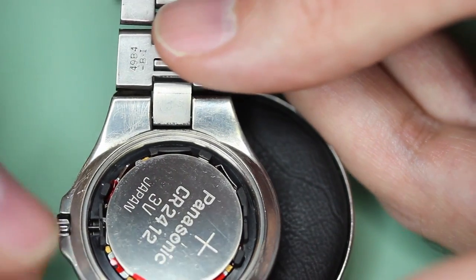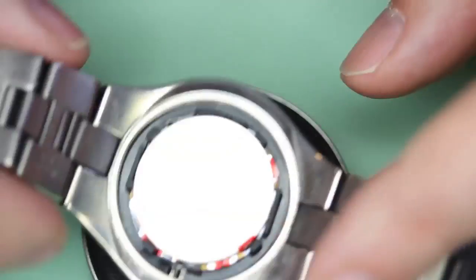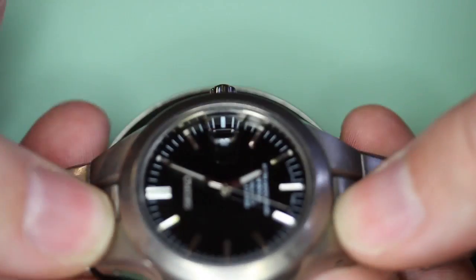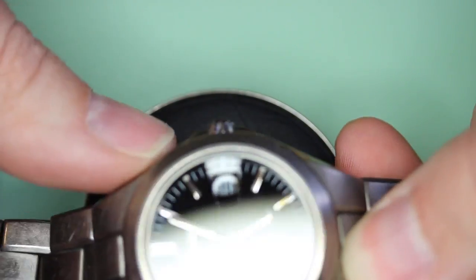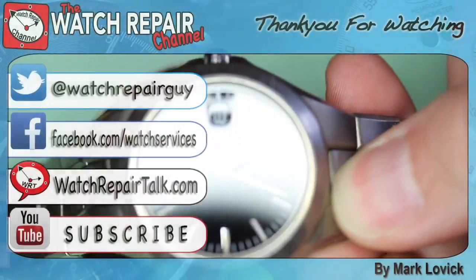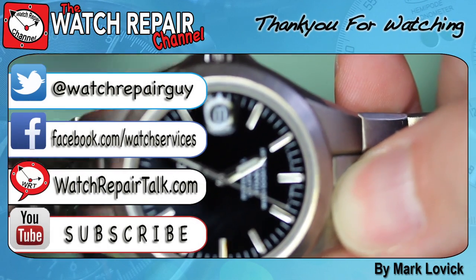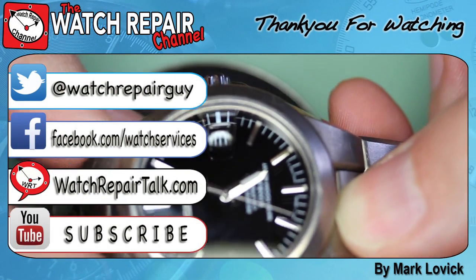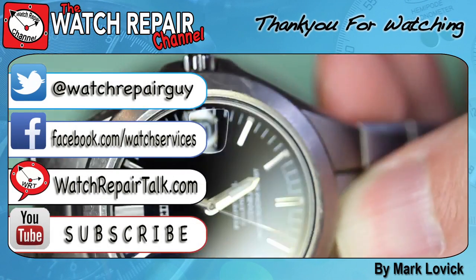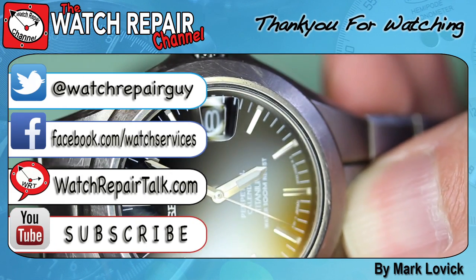So it's a very short video just to illustrate how to replace the glass in a Seiko watch. But not just a Seiko watch—this applies to any watch with a mineral glass that's held in place with a nylon gasket. So thank you for watching and see you next time.